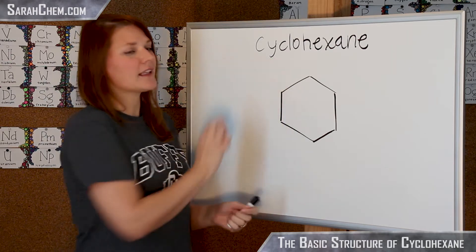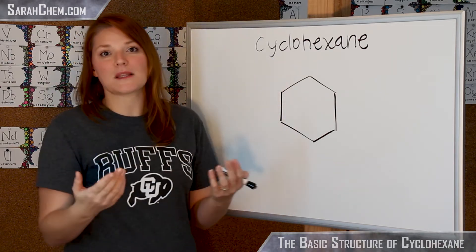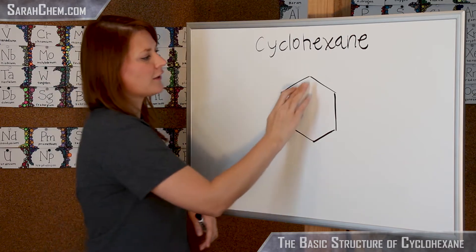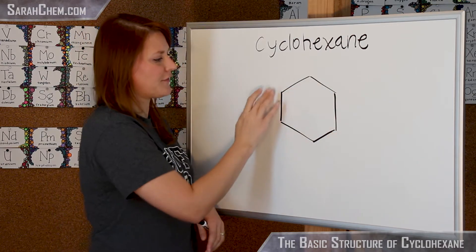Remember when we're talking about cyclo compounds, that means we're forming a ring. Hexane would mean six single bonded carbons, so we have one, two, three, four, five, six carbons.